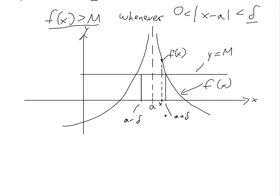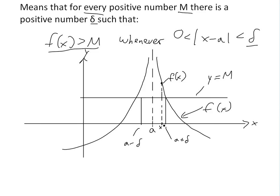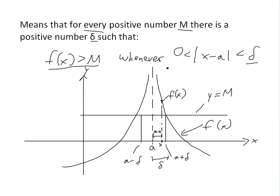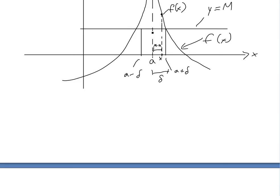So we just pick delta₁ as our delta. Now this point is a + delta and this is a − delta. Basically, if x is anywhere between these two points, then the distance |x − a| is less than delta. For every positive number M you'll have a different delta — and as you pick larger M values the interval gets smaller and smaller, because the closer you get to a the higher the number goes, all the way to infinity.